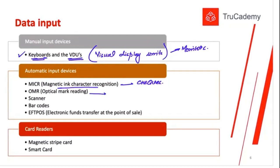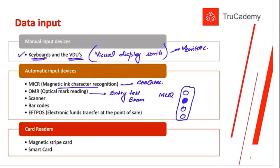Second is OMR — Optical Mark Reading. This is usually used in entry test exam papers. If you have seen MCQ papers with four options, they give you blank circles for A, B, C, and D, and you fill in one circle. When the paper is input into a specialized OMR scanner, whichever circle is highlighted gets read automatically. This is very helpful when processing large numbers of exam papers.